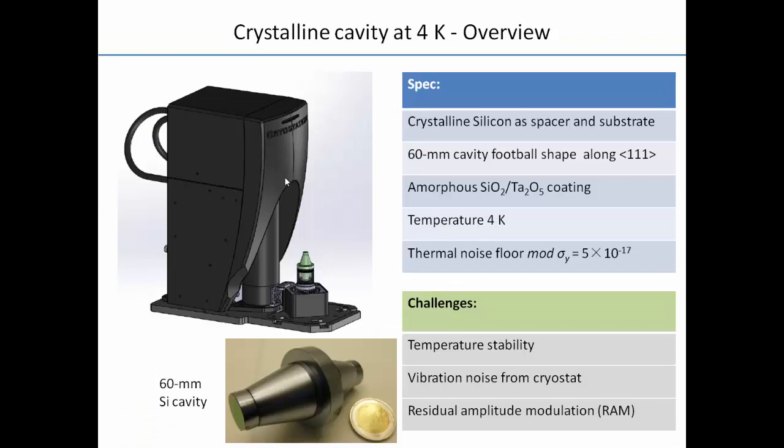At JILA, we are also building another cavity working at 4 Kelvin. That cavity uses silicon as the spacer and substrate with an amorphous coating, and the cavity is 60 millimeters long. We use a closed-cycle helium system to cool the cavity to 4 Kelvin. The thermal noise floor is 5×10⁻¹⁷, limited by the coating.